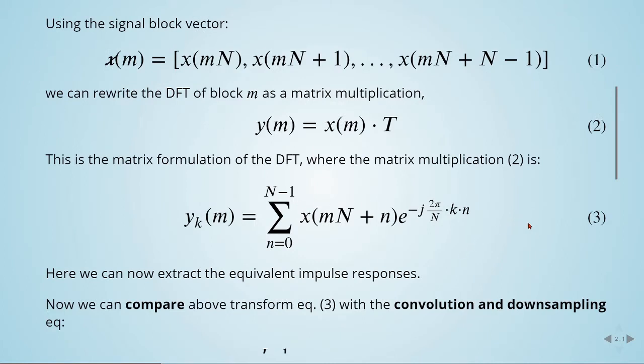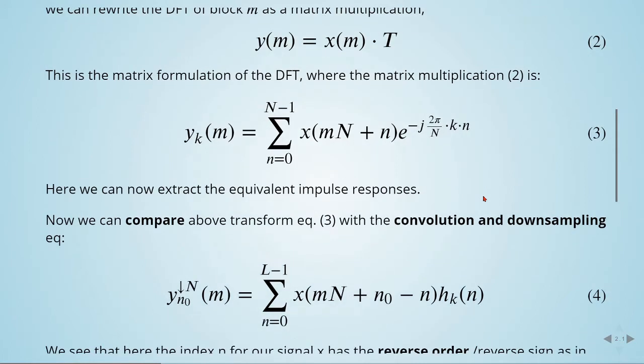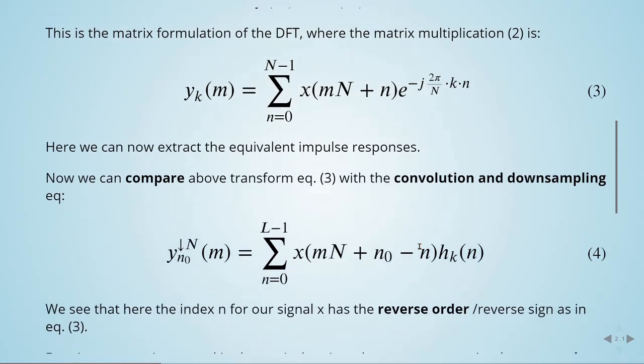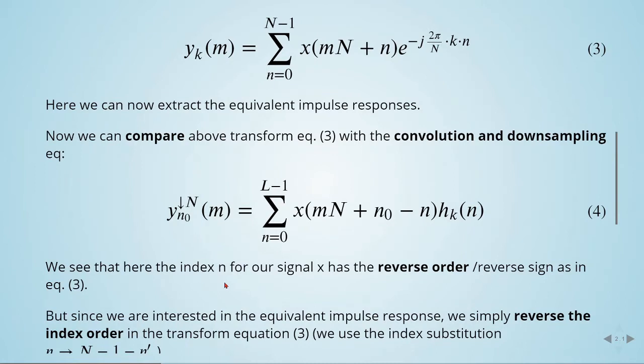Here we can extract the equivalent impulse responses. Now we can compare the above transform equation 3 with the convolution and downsampling equation given here. This symbol indicates downsampling. We see that the index n for our signal X has the reverse order or reverse sign as in equation 3.